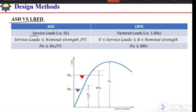In case of ASD, we consider the service load — we do not increase the loads, we just combine them and consider their maximum intensity based on the probability of occurrence. The service load should be less than the nominal strength divided by the factor of safety, so in ASD we apply the factor of safety on the strength of the member.